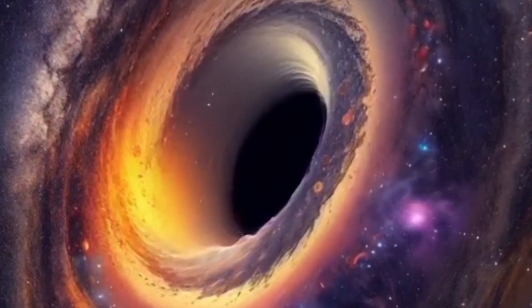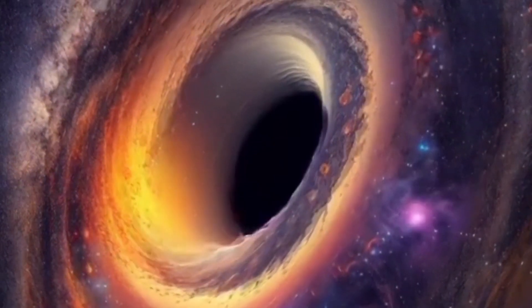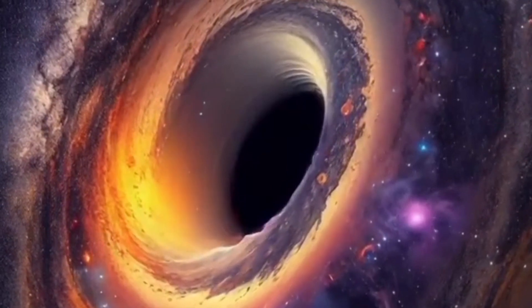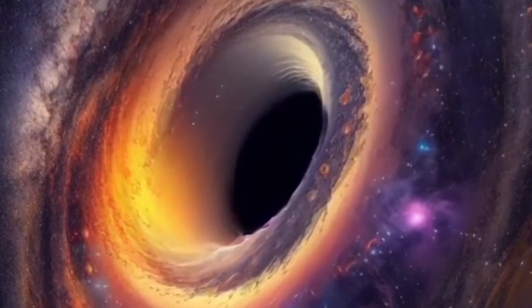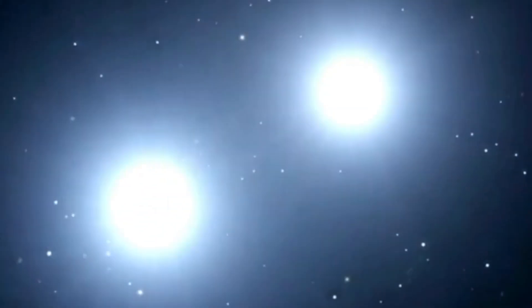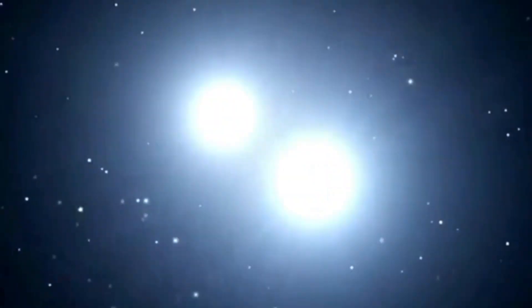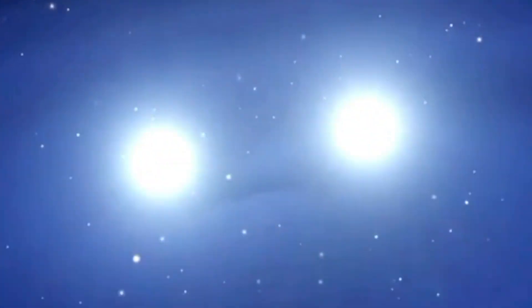How do black holes form? Ever wonder how these cosmic traps come into existence? Well, the tiniest ones are thought to have formed during the early moments of our universe's birth. Stellar black holes, on the other hand, have a more dramatic origin story. They emerge when massive stars collapse upon themselves, resulting in a spectacular explosion known as a supernova. Imagine a star's heart giving out and its outer layers flung into space.